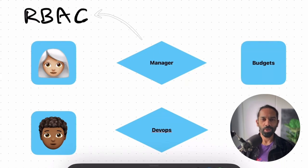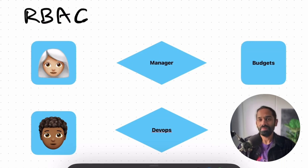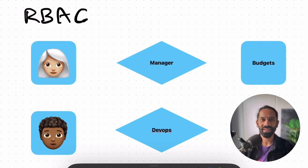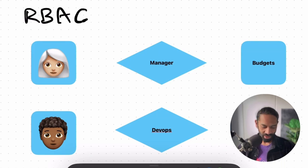First up, we've got role-based access control or RBAC. This is the classic go-to approach and RBAC, as the name suggests, is all about roles. Think of it like this: your organization has specific job roles like engineer, product manager or sales, and there are different access permissions assigned to each of these roles. So when a user logs in, they get access based on their role.